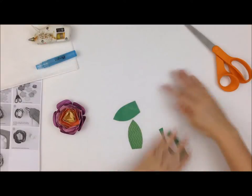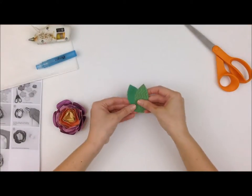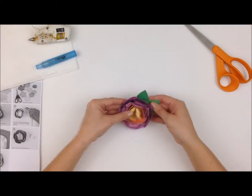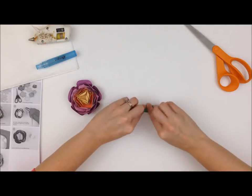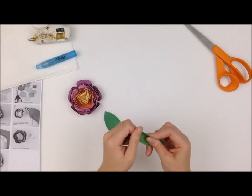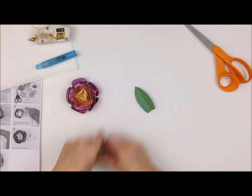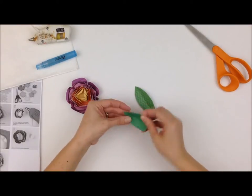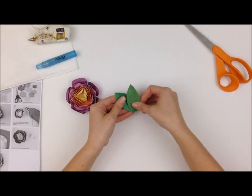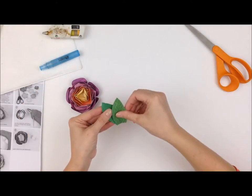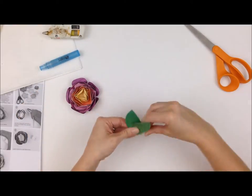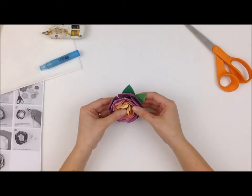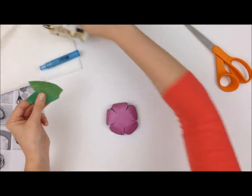I'm going to fold each one in half and give it some dimension and then I'm going to glue the leaves to each other and then I'm going to glue the leaves to the back side of the flower. I just want to make sure that they're situated in such a way that they're not sticking out too far and that they look really nice with the petals that they are behind.